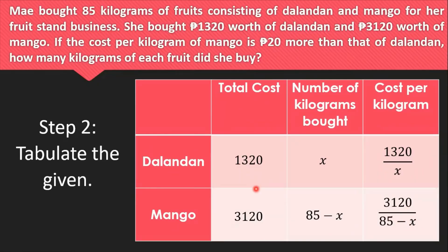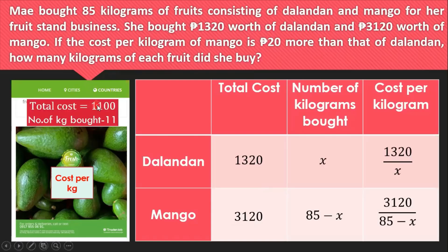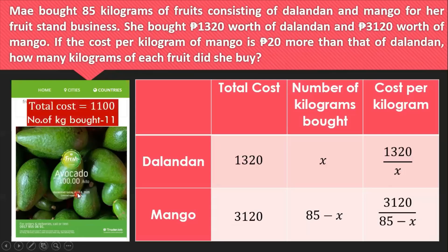To help you understand this concept, consider a store selling avocado. If the total cost of buying all of it is 1,100 pesos and the number of kilograms bought is 11 kilograms, we simply divide the total cost by the number of kilograms to find the cost per kilogram — which gives 100 pesos per kilo. That is the same concept used here: to find the cost per kilogram per fruit, divide the total cost by the number of kilograms bought.